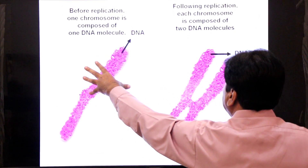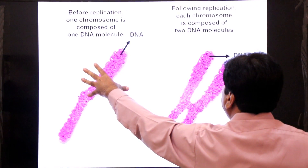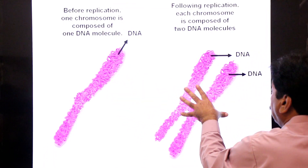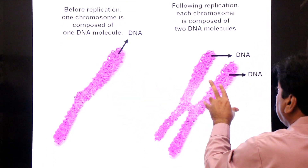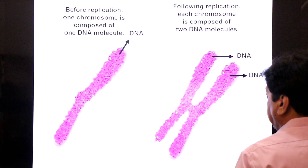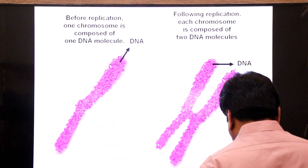Before replication, one chromosome has one molecule of DNA. After replication, one original chromosome has two molecules of DNA.